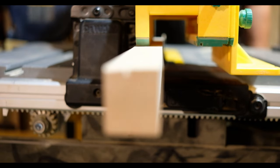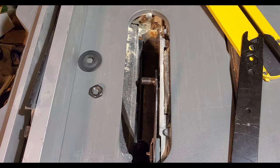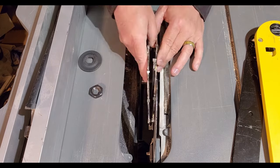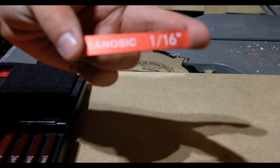This is pretty straightforward. Throw a dado stack on the table saw, or a single blade if you don't have one, and then sneak up on the width of your mortise.